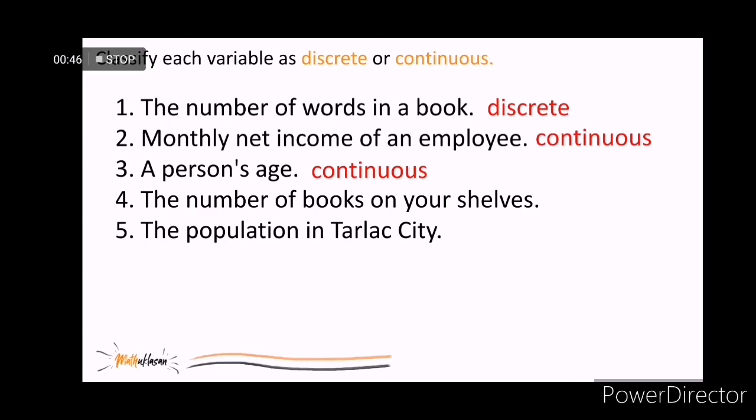Number 4. The number of books on your shelves. It's discrete. How about the population in Tarlac City? It's also discrete. Because whenever we talk of people or persons, they are always counted as a whole, right? There's no 1.5 person.